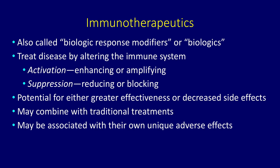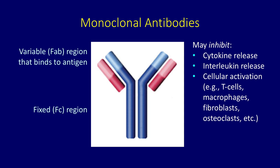Here is an example of a monoclonal antibody. The top portion of the antibody is the variable or FAB region, which is what binds to the antigen. The fixed portion, or FC region, does not change. These monoclonal antibodies may inhibit inflammatory reactions like cytokine release and interleukin release, and they may also inhibit cellular function and activation in cells like T cells, macrophages, fibroblasts, and osteoclasts.